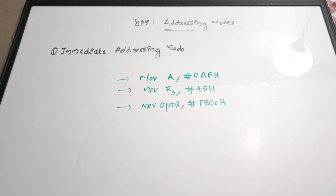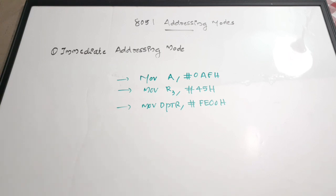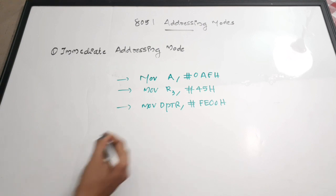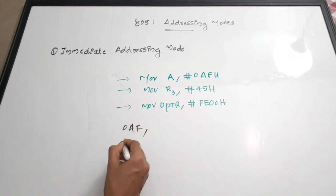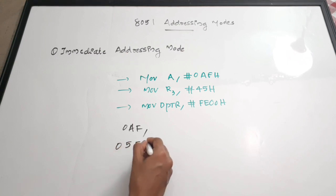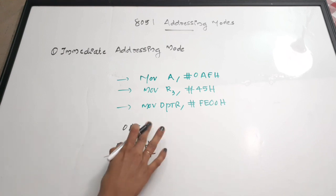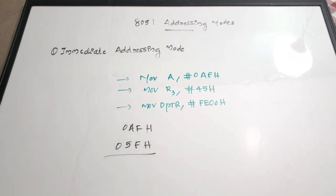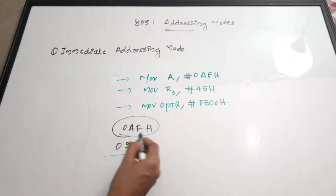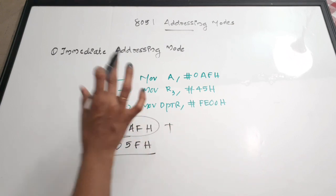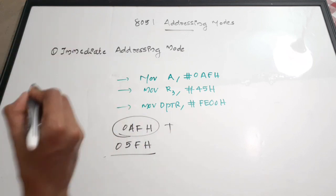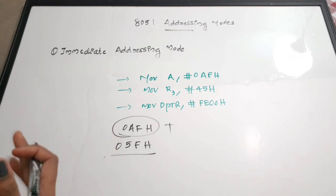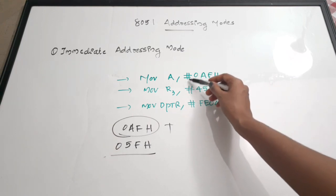The first type is immediate addressing mode. Here we are going to pass an immediate data which is ready to be processed. Consider that we want to add two numbers, say 0x00AF and 0x05F. These are hex values — in 8051 we do hexadecimal processing. If we want to add two numbers and directly give that data within the instruction, that is called immediate addressing mode.